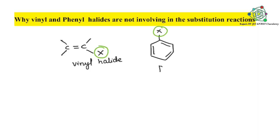So reason, you see first structures - vinyl halide and phenyl halide structures. So X means halogen: fluorine, chlorine, bromine, iodine. Everyone knows very well. So first we need to learn about reason why these two are not involving in the SN1 reaction.